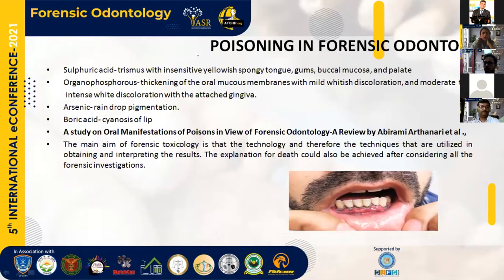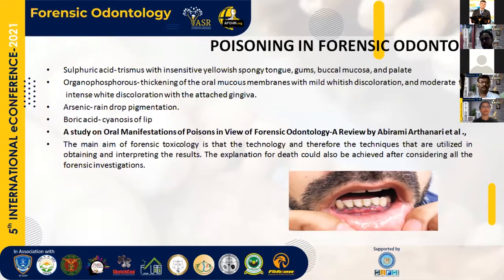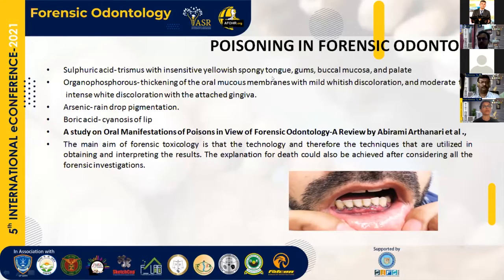Next is forensic odontology in poisoning cases. In forensic work, when a person presents with a suspected case of poisoning, we collect the viscera and send it for chemical analysis, which usually takes one to two months. We send various parts including the stomach, small intestine, upper part of small intestine, and each half of the kidney. In forensic odontology, sulfuric acid causes trismus with yellowish discoloration of the tongue, gums, buccal mucosa, and palate. Organophosphorus can cause whitish discoloration over the mucous membrane and attached gingiva. Arsenic presents as hyperpigmentation — the raindrop pigmentation. Boric acid mainly causes cyanosis symptoms.